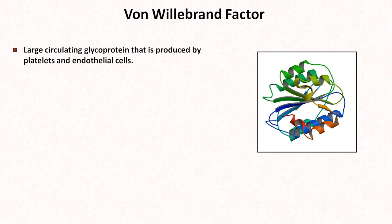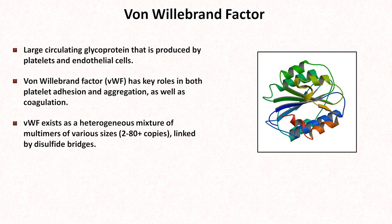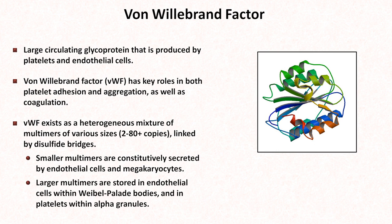The normal response of platelets to vascular injury is dependent upon von Willebrand factor — a large circulating glycoprotein produced by platelets and endothelial cells, which has key roles in both platelet adhesion and aggregation, as well as in coagulation. Von Willebrand factor exists as a heterogeneous mixture of multimers of various sizes, linked by disulfide bridges. Smaller multimers are constitutively secreted, while larger multimers are stored in endothelial cells within Weibel-Palade bodies and in platelets within alpha granules. The larger multimers have greater activity. Von Willebrand factor also binds to circulating factor VIII, greatly increasing its half-life.